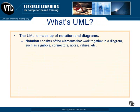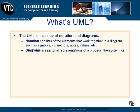By notation, I mean the elements that work together in a diagram, such as symbols — for example classifiers or stick figures — connectors such as arrows, dependencies, associations, notes that you might add, values, even things like pseudocode and code. All of these things are considered notation. And diagrams, of course, are pictorial elements of a process, a system, or some part of the system, such as the class diagram you saw in the previous slide.